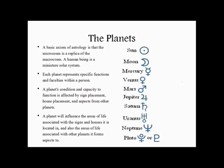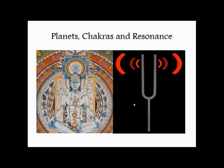When we analyze a planet in the context of the birth chart, we note that it will influence areas of life associated with the signs and houses it is located in, and also the areas of life associated with other planets it forms aspects to. These basic symbols of planets, signs, houses, and aspects all interweave in fluent astrological interpretation.